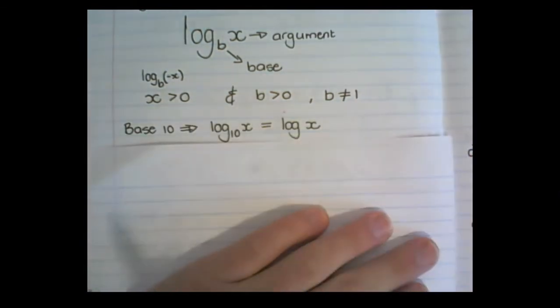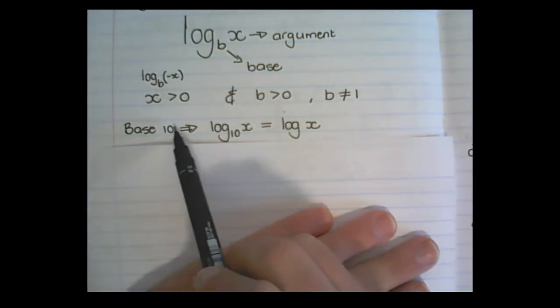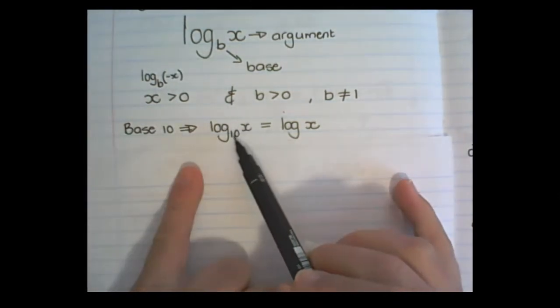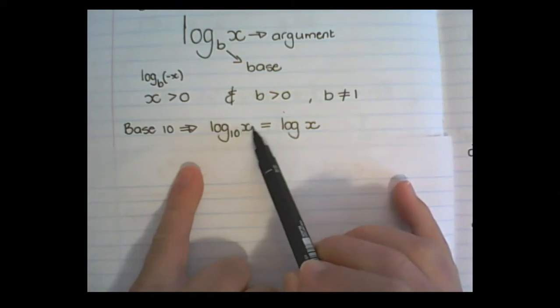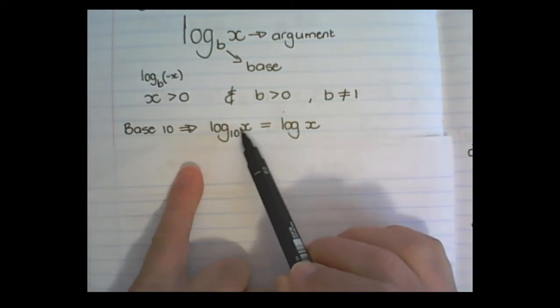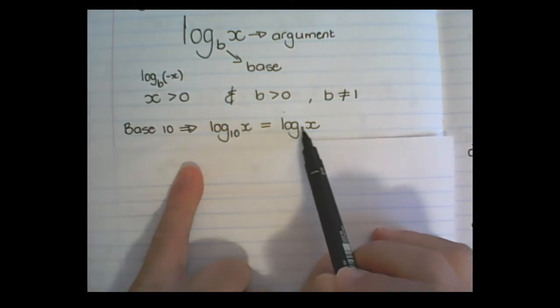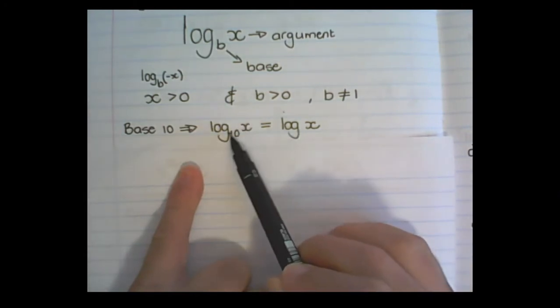Another form of log which we find is when the base is ten. So it's log ten with the argument. And because this is the most natural log, we don't have to write the ten. But it's only when we use base ten.